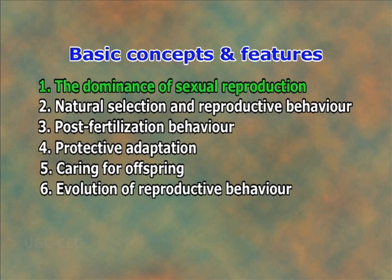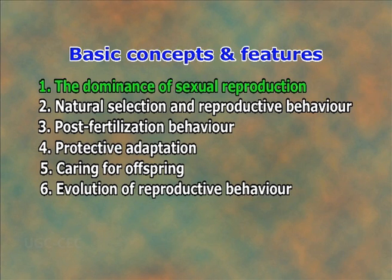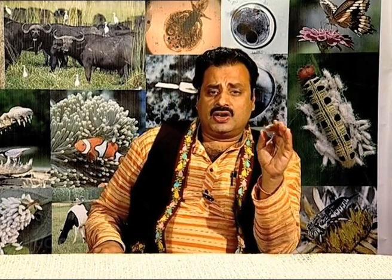Number 1: The Dominance of Sexual Reproduction. Two explanations have been given for the dominance of sexual reproduction. Both are related to the fact that the environment in which an organism lives changes in space and time, and the evolutionary success of an organism is determined by how well it adapts to such changes.